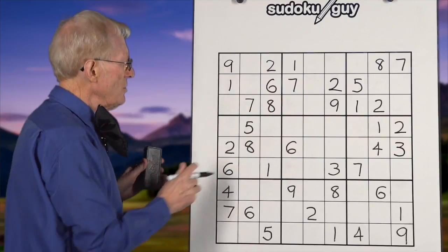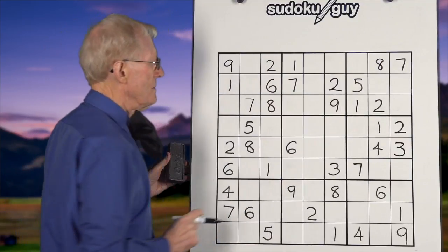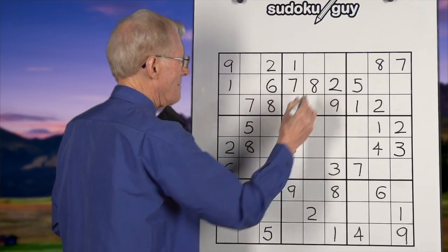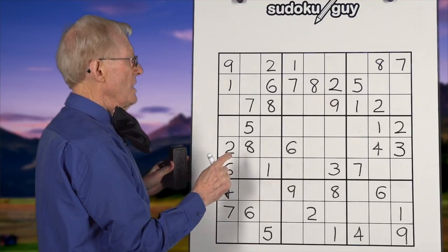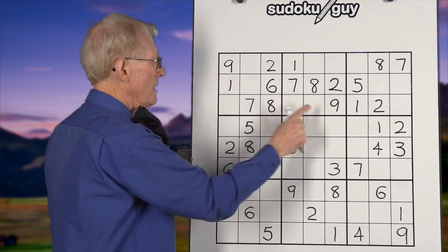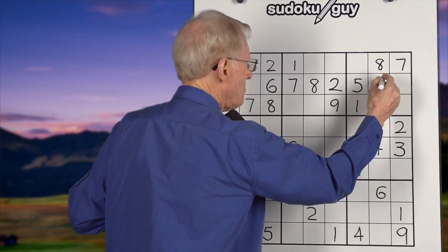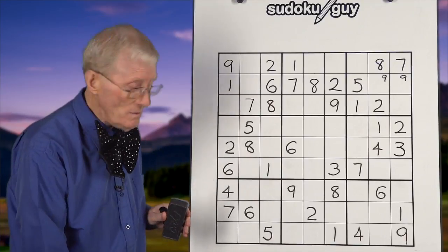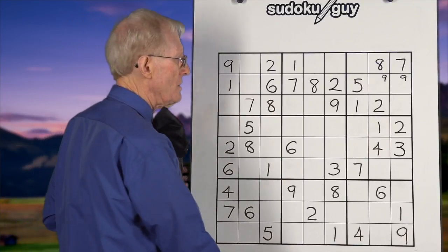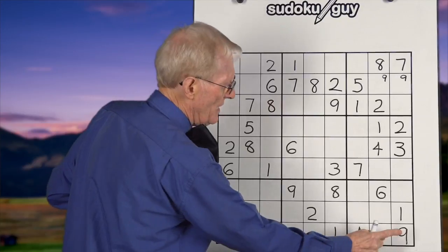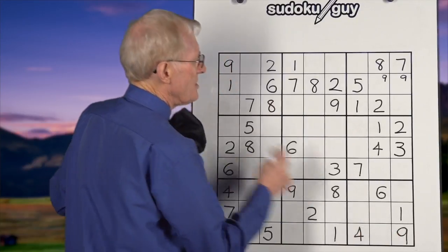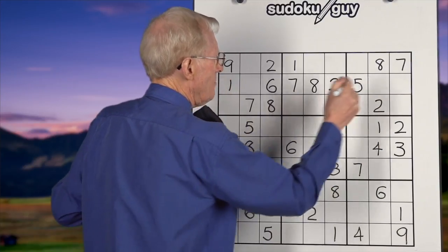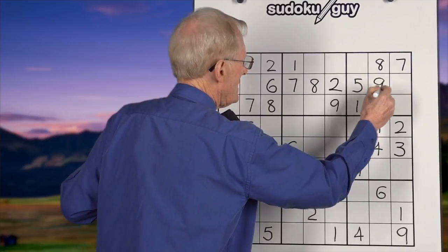For 8s: we have two 8s — a bottom and a top — so in this block the 8 has to go in the middle, right there. For 9s: we have two 9s — a top and a bottom — and over here it could go in two spots. We look down and notice there's a 9 already there, so that means this cannot be a 9. This has to be the 9, so we make that a 9. We've now done those three top blocks.